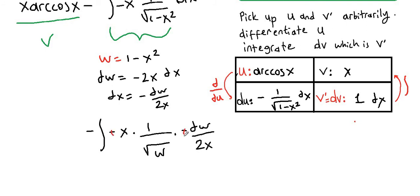Here, two negative signs multiply to positive. The x's cancel out, and we can pull one half to the front of the integral sign.